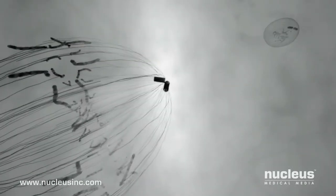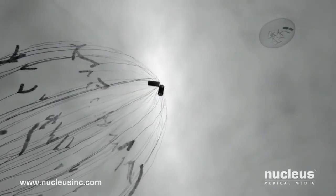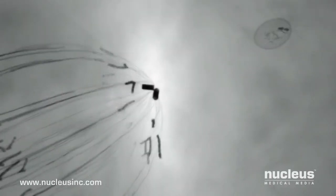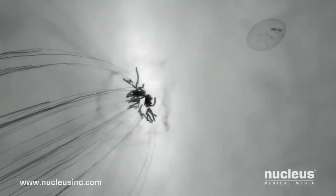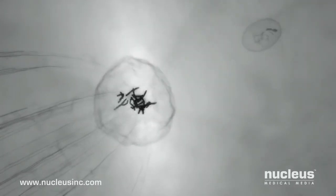The female genetic material, awakened by the fusion of the sperm with the egg, finishes dividing, resulting in the female pronucleus, which also contains 23 chromosomes.